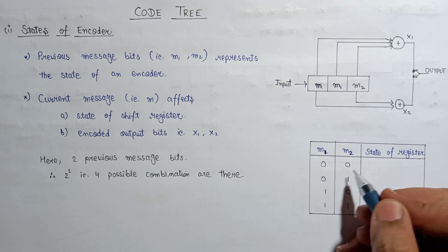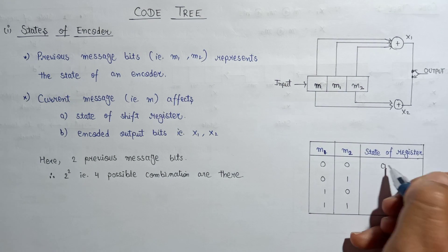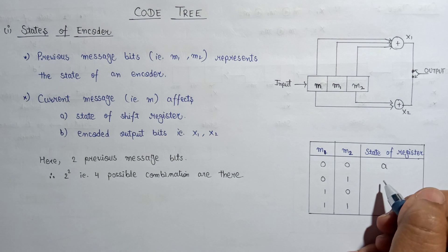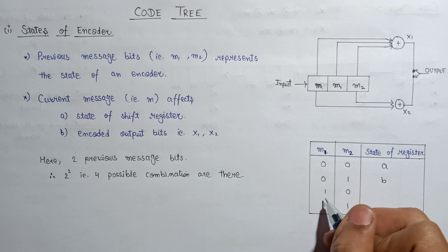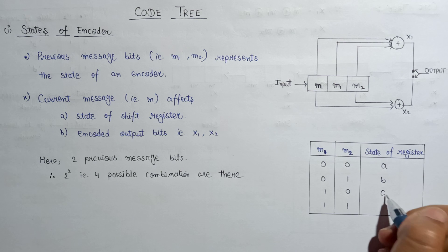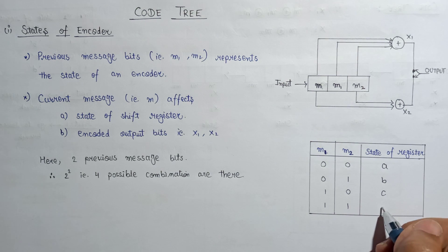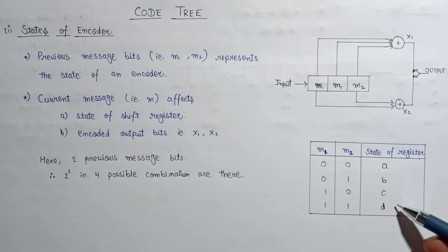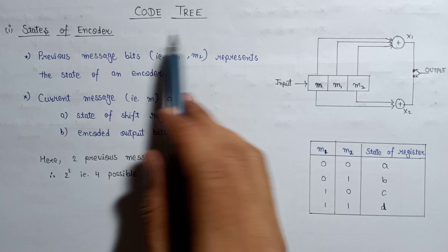So these are the possible combinations. Let us assume that 00 represents state A, 01 represents state B, 10 represents state C, and 11 represents state D. These are the four states of the shift register. We will use this table to plot the code tree.